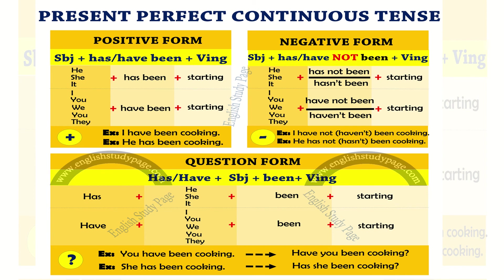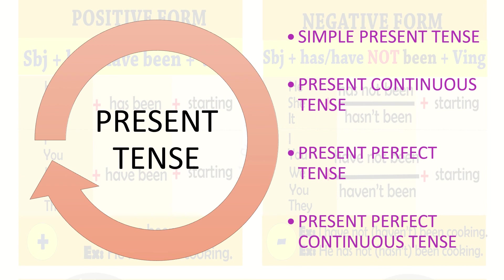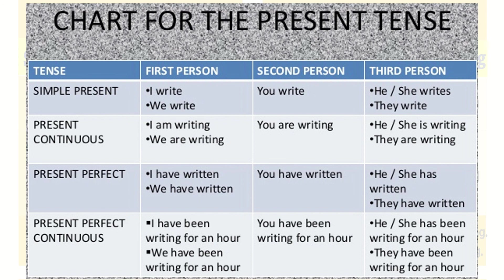Children, you can go through this chart. There is the positive form, the negative form, and the question form — you can copy it down so it is very clear for you. We have now finished with the four forms of the present tense. The chart shows tense, simple present, present continuous, present perfect, and present perfect continuous, and for each one, in the first person, second person, and third person, how we write or speak is clearly given.